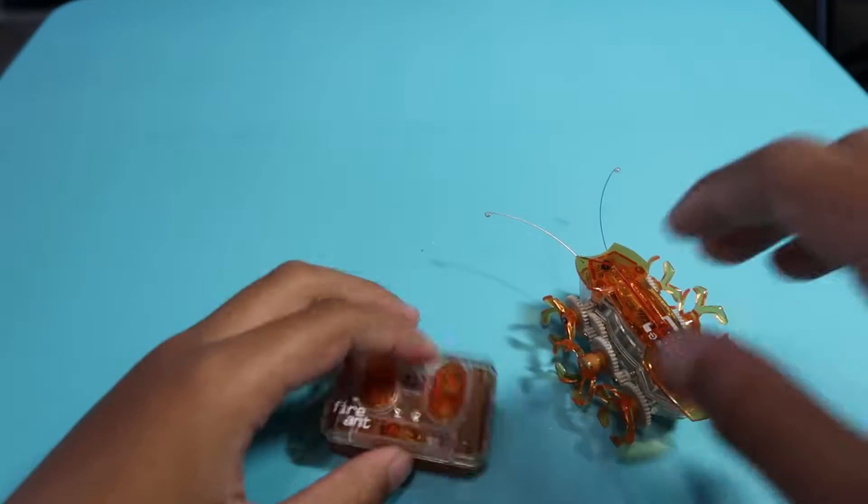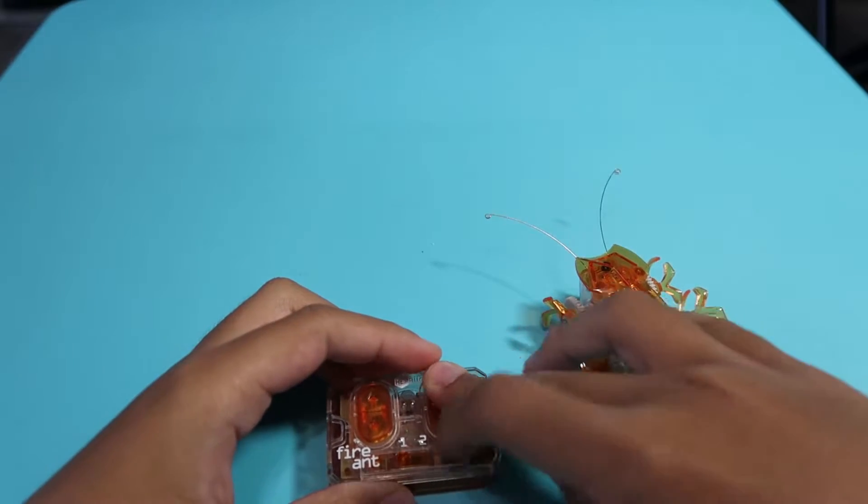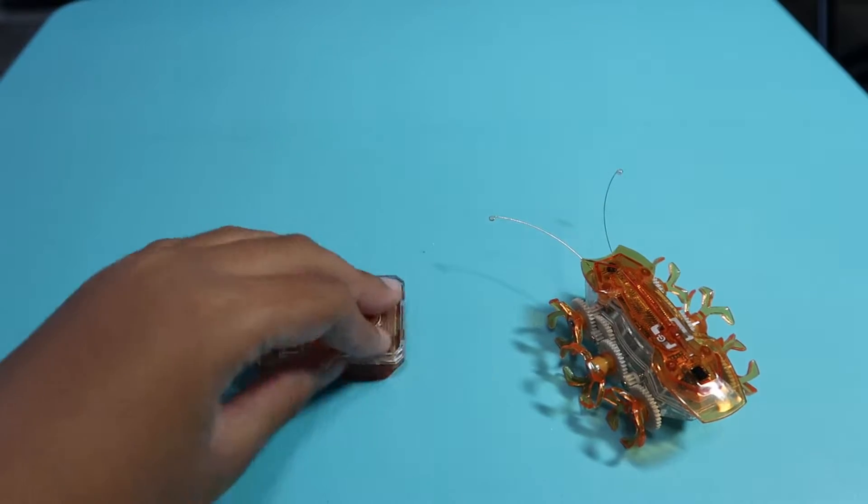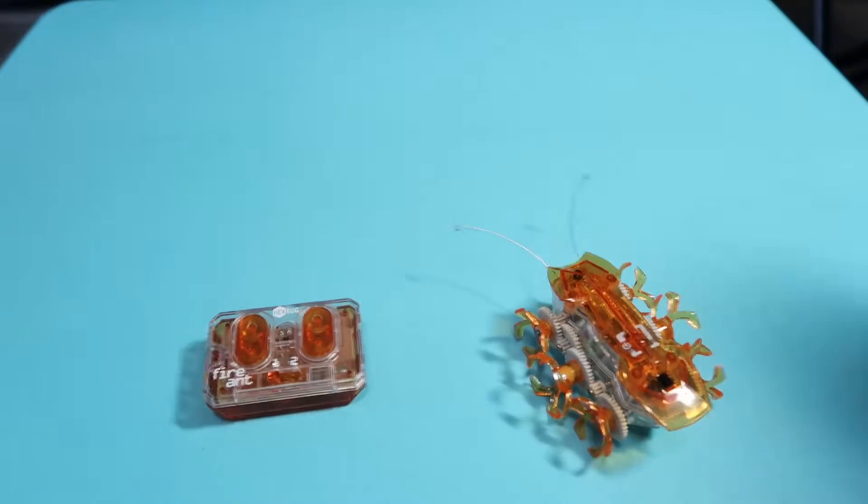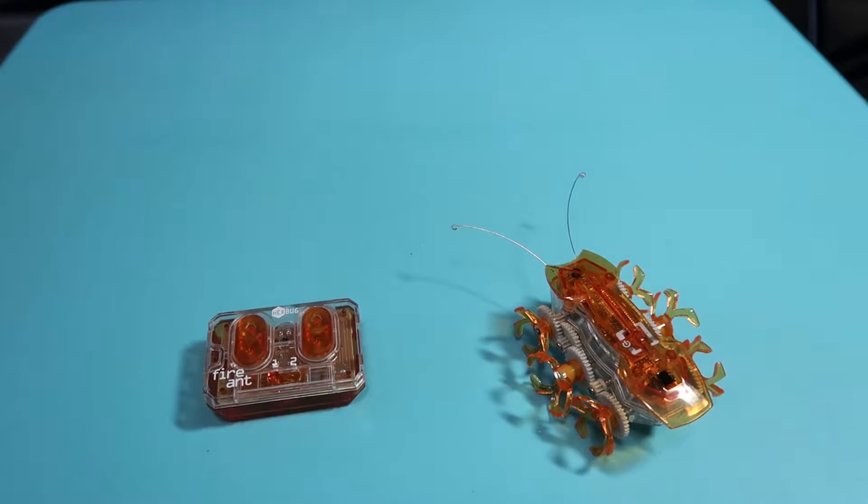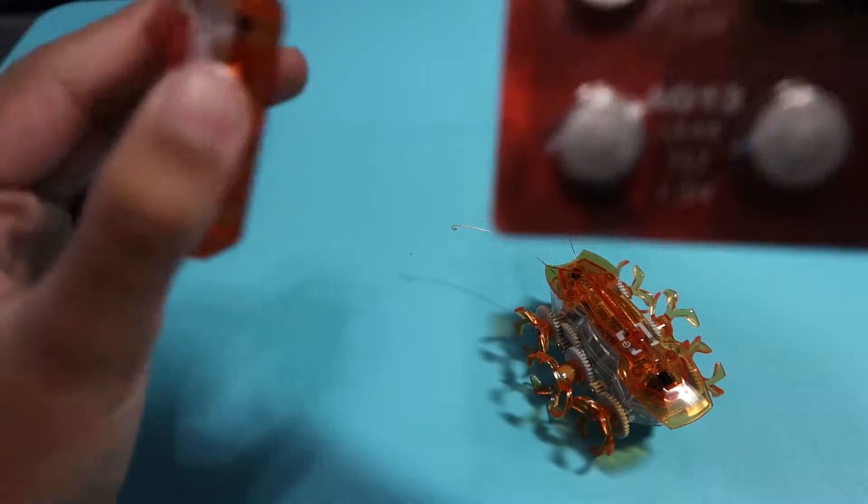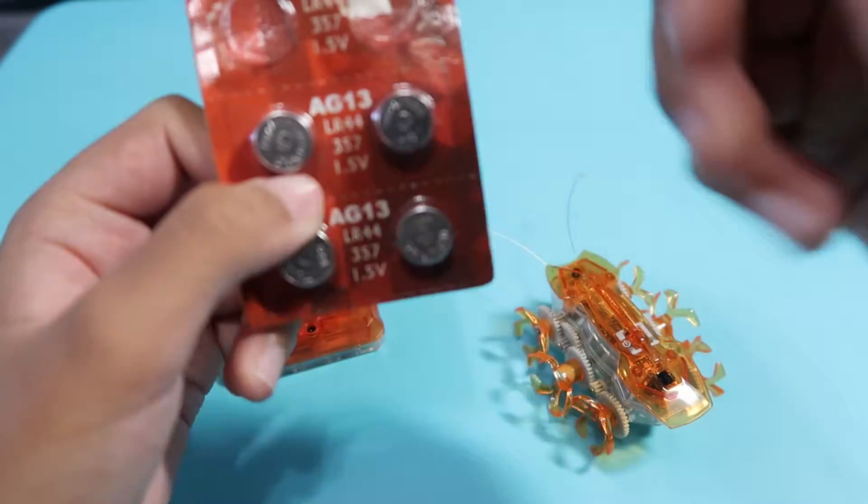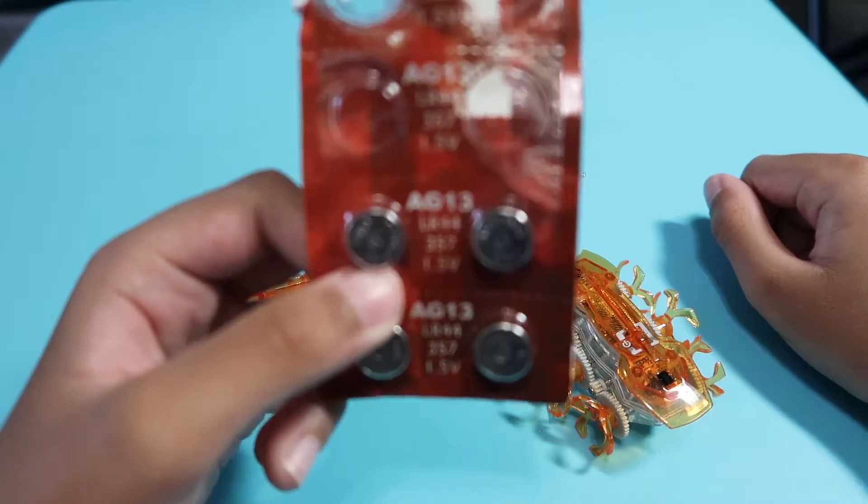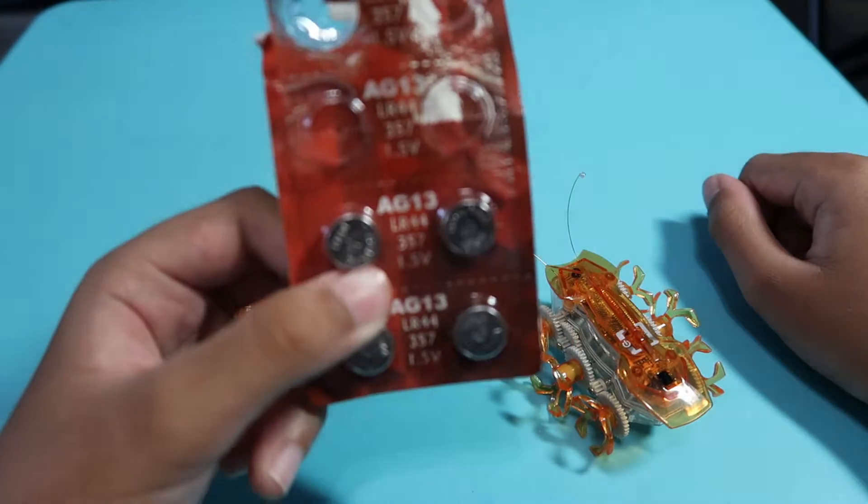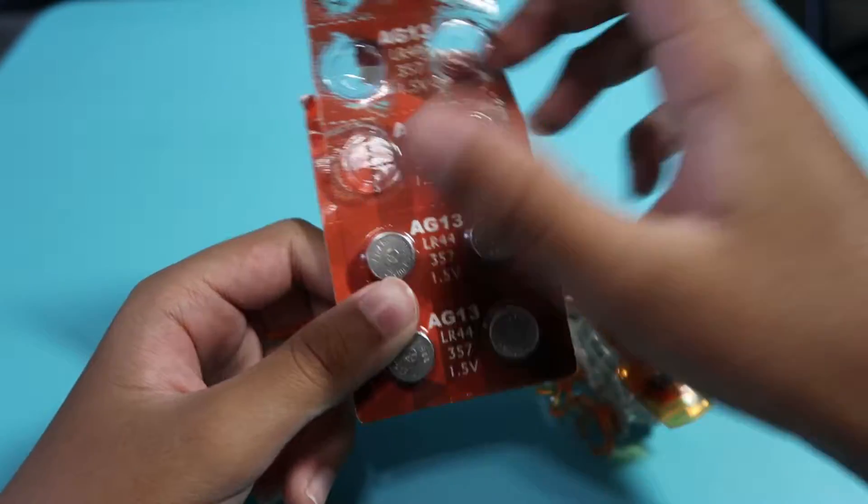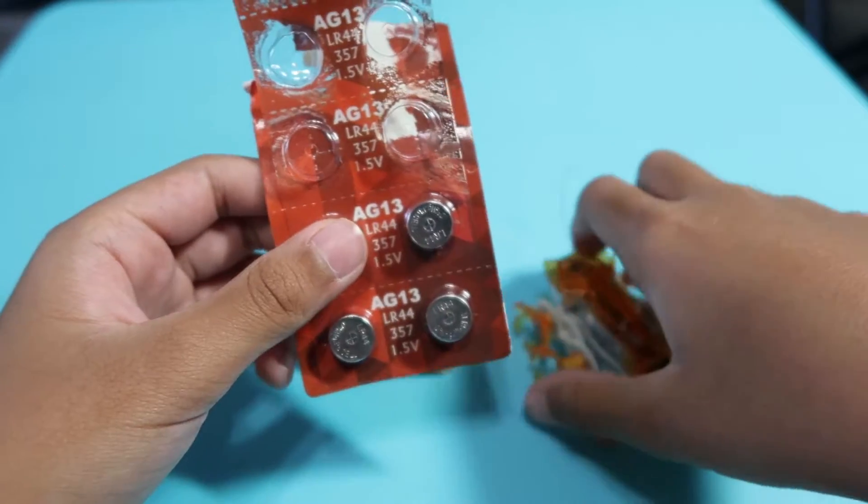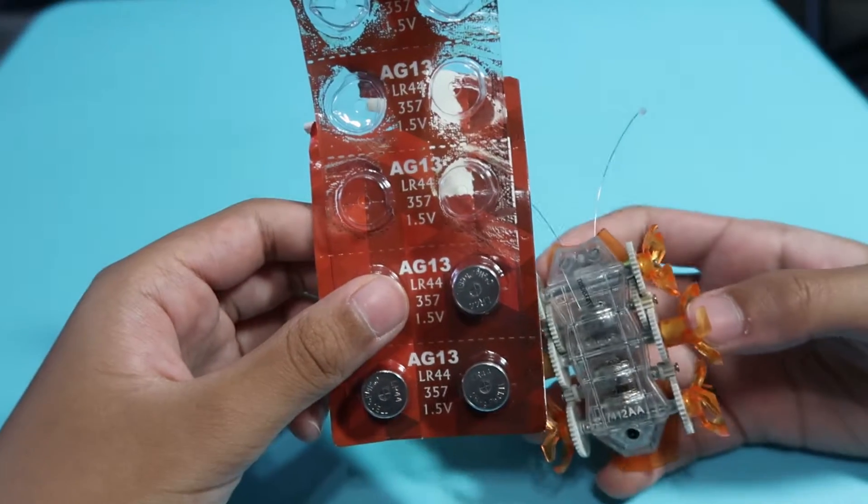It's pretty much the same as when I reviewed the Hexbug Larva. The remote control uses two AG13 LR44 357 1.5 volt batteries. Let me let the camera focus. Then the Fire Ant uses the same type of batteries, except it uses three of them.